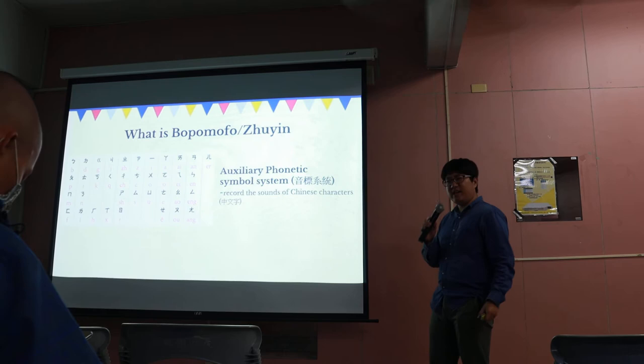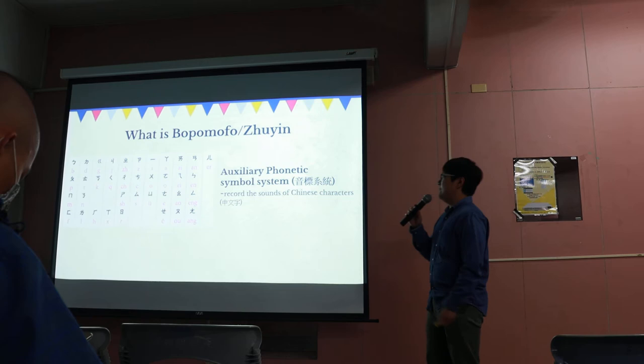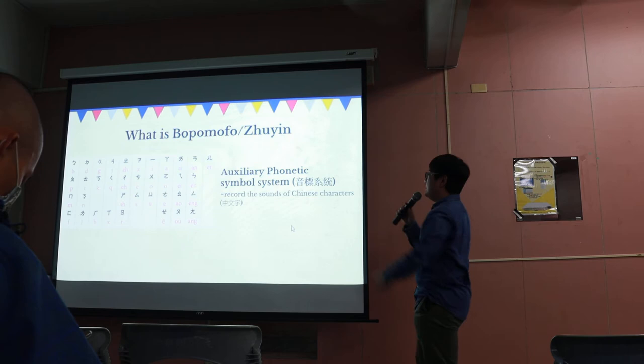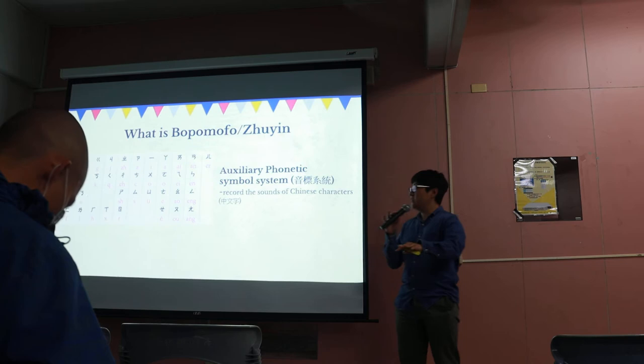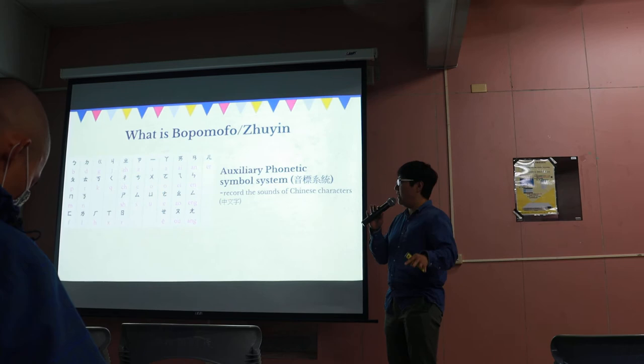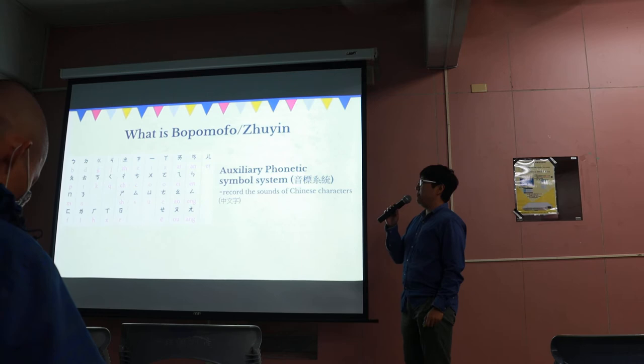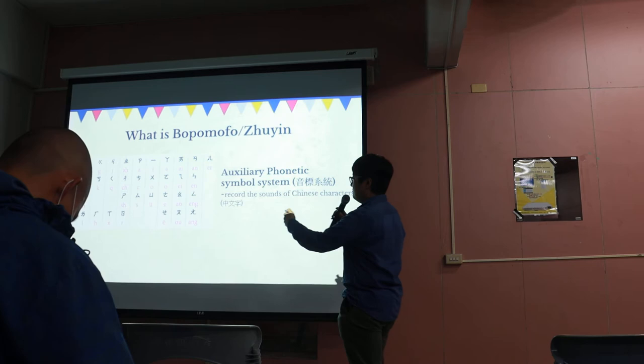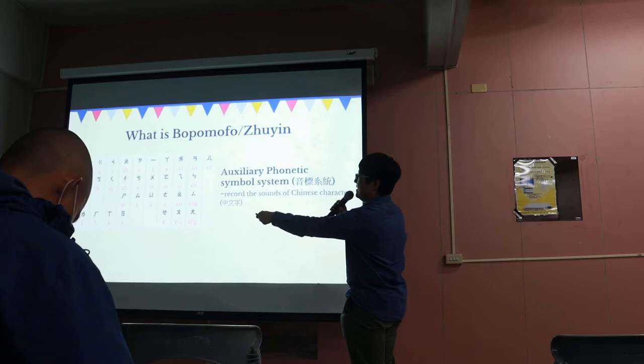So what is Bopomofo actually? What is Zhuyin? Actually, it is an auxiliary phonetic symbol system. That means it records the sounds of Chinese characters. You will never see it on a bus or in any public area in Taiwan. It only shows up in a dictionary or in some textbooks at school. So you can see here: this symbol sounds 'Bo', this symbol sounds 'Po', and this symbol sounds 'Z'.